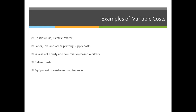Some other variable costs include salaries of hourly and commission-based workers, only if they only get paid if they work. But if someone works hourly and they work 40 hours a week every single week and get paid vacation, you can budget for that — it's a fixed cost. But if they only work two hours this week and 15 hours next week, and it's always different, then it would be a variable cost.